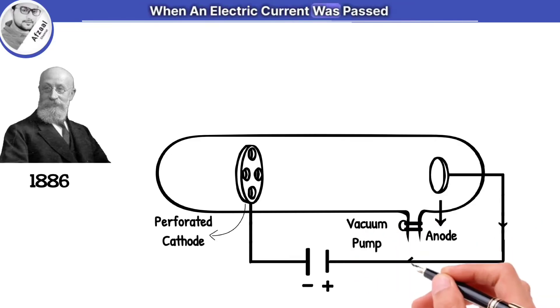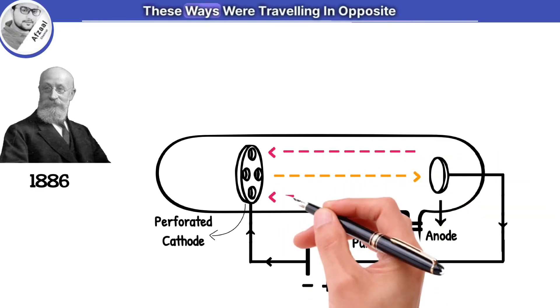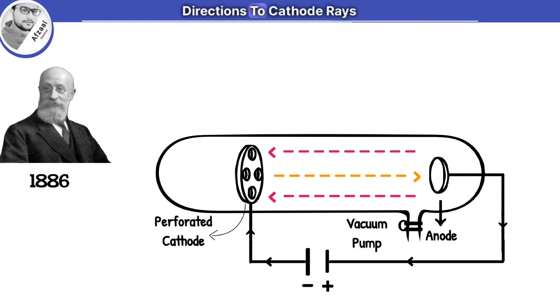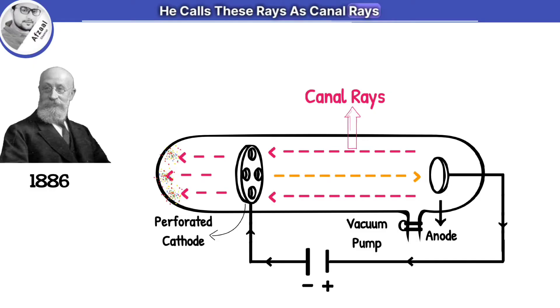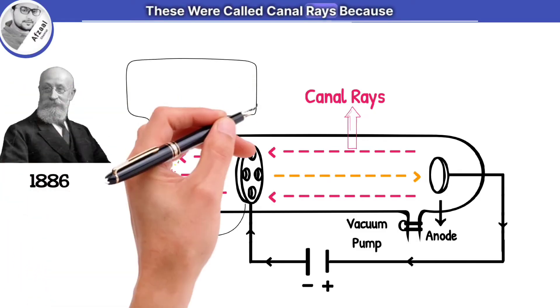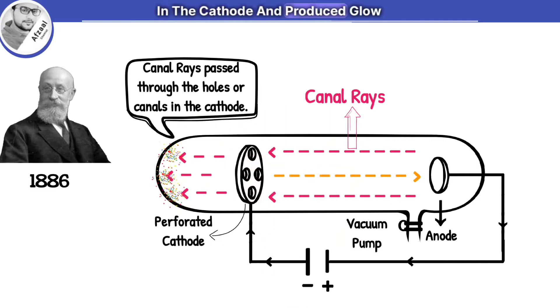When an electric current was passed through it, something incredible happened. Goldstein observed that in addition to cathode rays, other rays were also present in the discharge tube. These rays were traveling in opposite directions to cathode rays. He found that these rays passed through holes present in the cathode and produced a glow on the walls of the discharge tube. He called these rays as canal rays because they passed through the holes or canals in the cathode and produced glow.